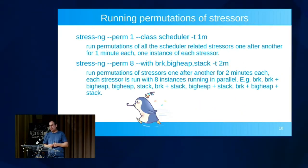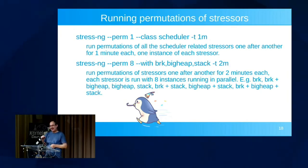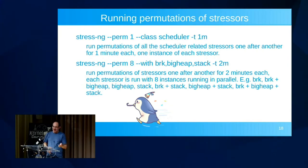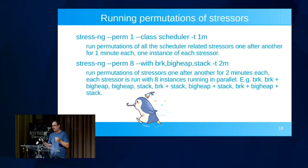I've also added a `--permute` option that runs all permutations of a given set of stressors. For example, with brk, bigheap, and stack stressors, it will run each individually and then every combination — brk, then brk plus bigheap, then bigheap, then stack, and so on. It's a thorough way to do a mix stressor thrash test.